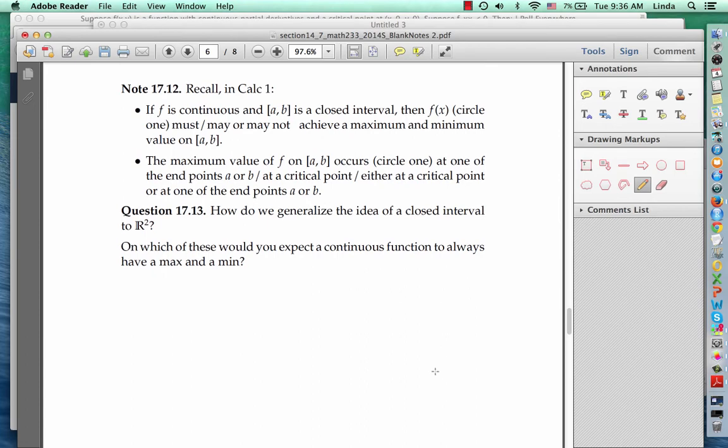Next, we're going to talk about absolute maximums and minimums. Remember in Calculus 1, if f is a continuous function, and a, b is a closed interval, then f of x must achieve its maximum and minimum value on that closed interval. Now the maximum value of f occurs at either a critical point in the interior of the interval, or at one of the end points, a or b.